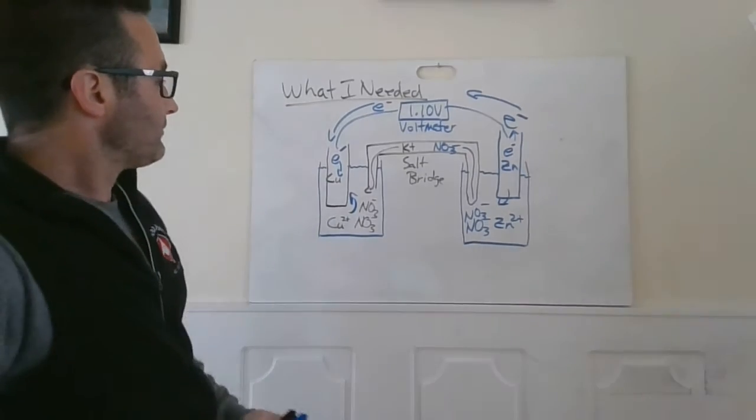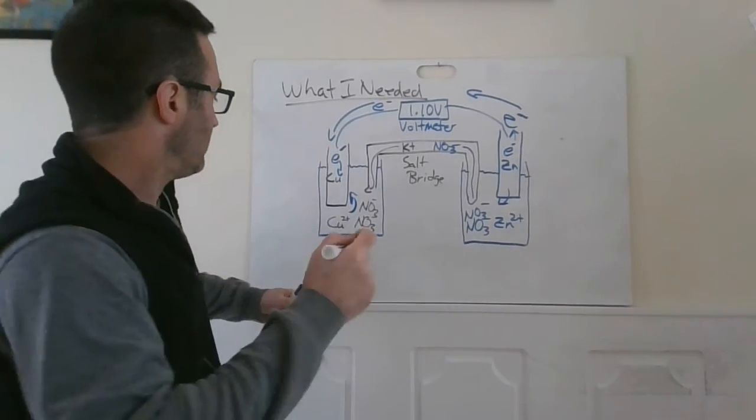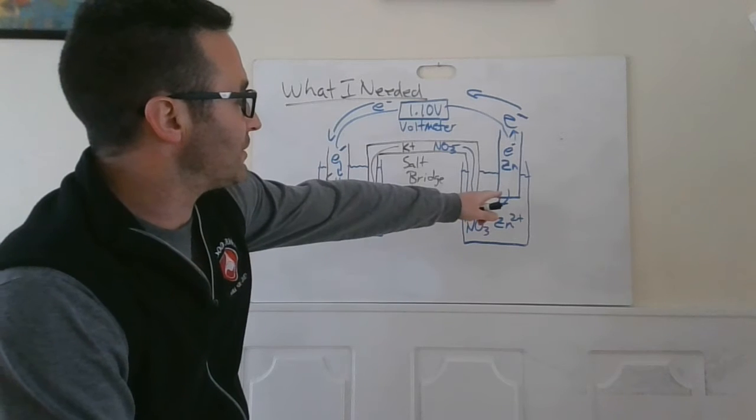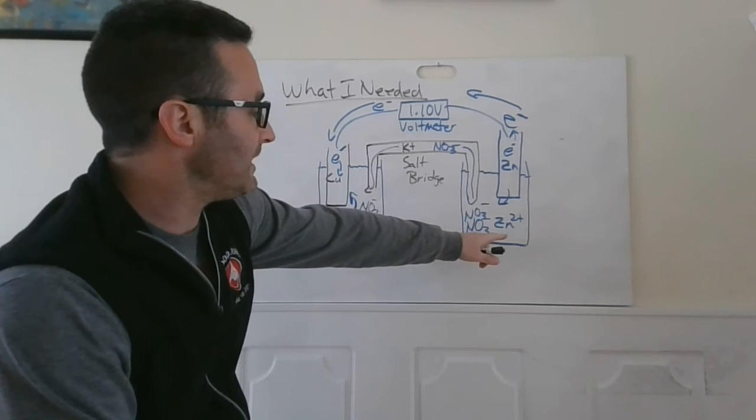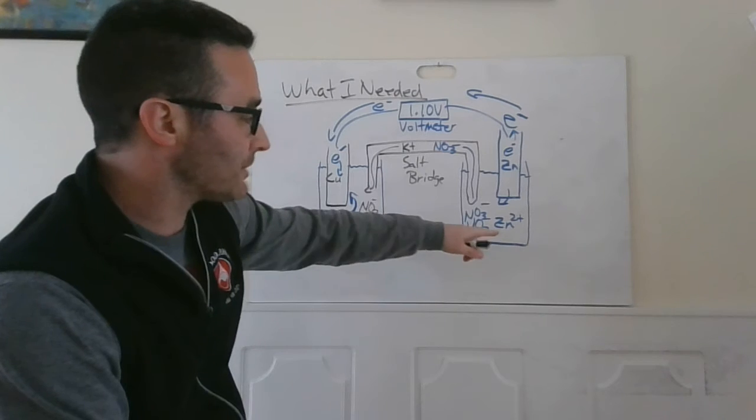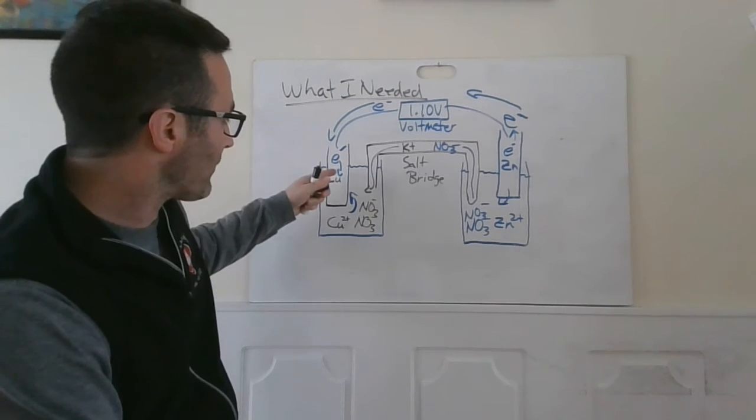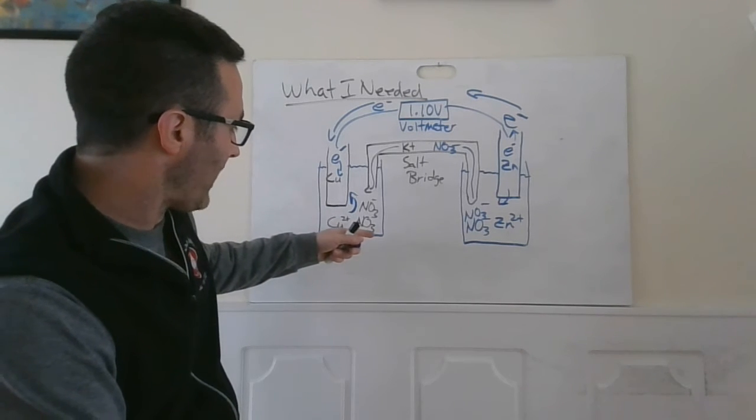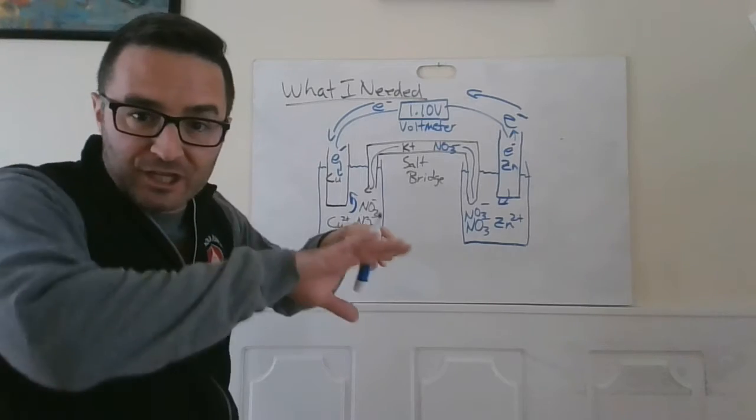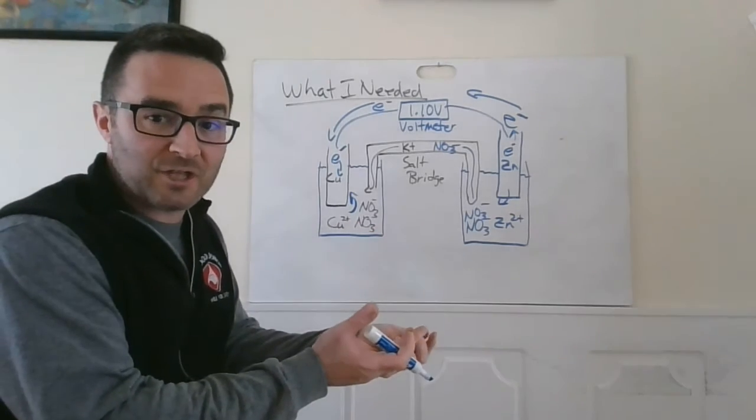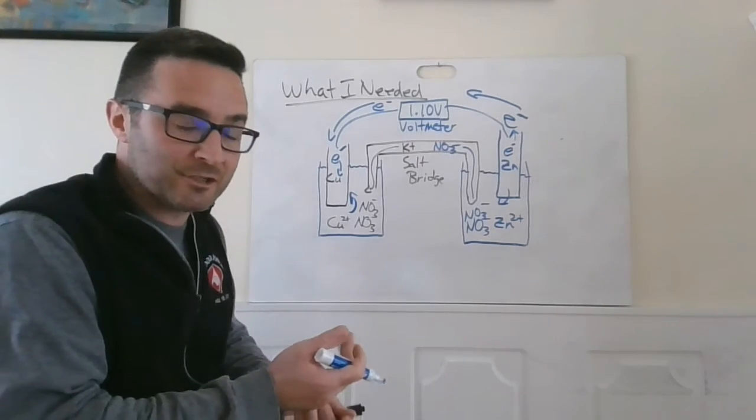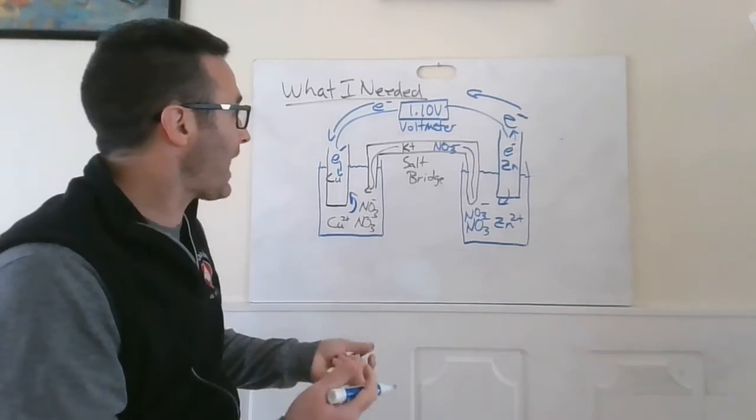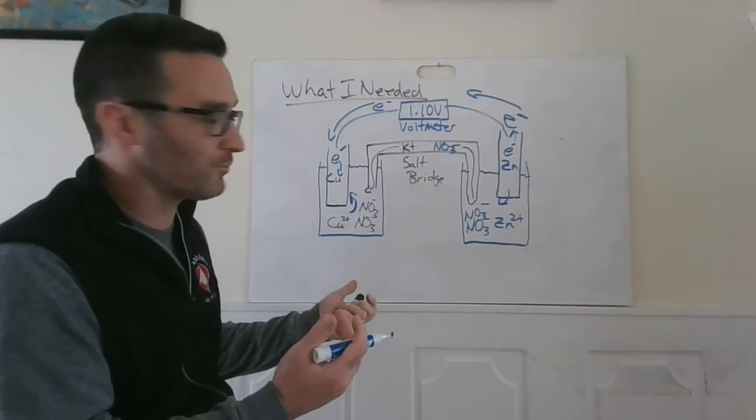So this is a galvanic setup. So in order to make it work, here's your setup. You're going to need zinc in a solution, ideally with zinc ions and some negative ions to balance, copper in a copper solution with some negative ions to balance, and then a salt bridge to keep the two things separate. Because if all this stuff happens in the same pot, you're going to get direct electron transfer, you're going to see heat, but you're not going to see any electrons transferred from side to side.